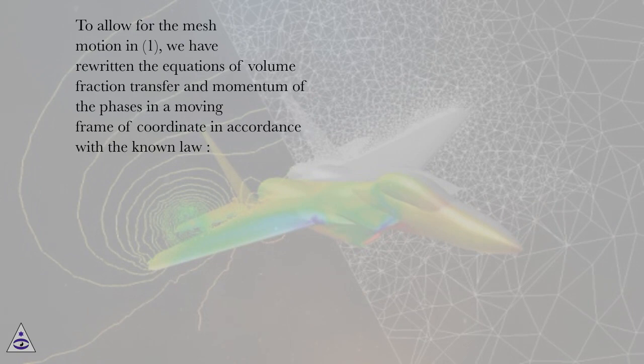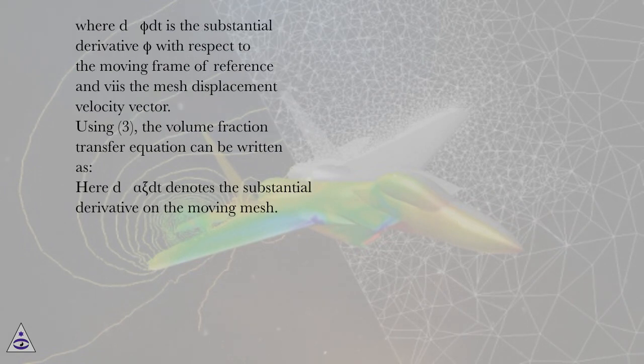To allow for the mesh motion, we have rewritten the equations of volume fraction transfer and momentum of the phases in a moving frame of coordinates in accordance with the known law. Where d asterisk phi dt is the substantial derivative phi with respect to the moving frame of reference and v is the mesh displacement velocity vector. Using this, the volume fraction transfer equation can be written as,